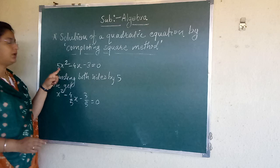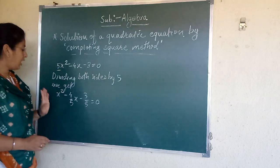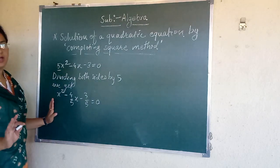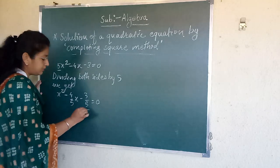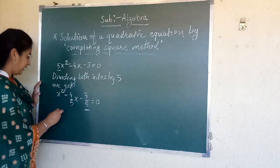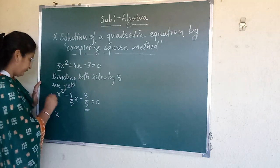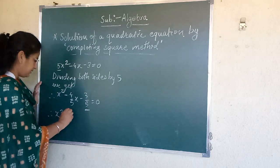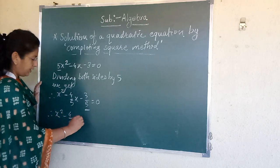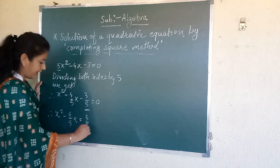So we make the coefficient of x² equal to 1. After that same steps we have to do. First, third term we have to take to right hand side. x² - 4/5x = 3/5.